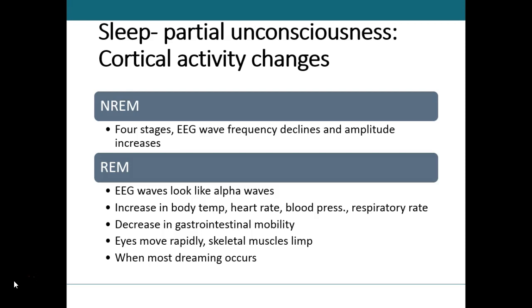Non-rapid eye movement (NREM) sleep consists of four stages that differ based on how deep you are asleep. Stage one is a transition stage between wakefulness and sleep, usually lasting one to seven or eight minutes. You are fully relaxed, eyes closed, with a few thoughts still going through the brain. People awakened during this stage often say they weren't asleep.